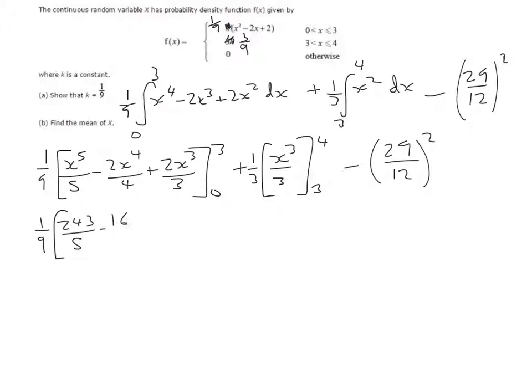162 over 4, plus 54 over 3. And if we substitute in the 0, all of those terms become 0.